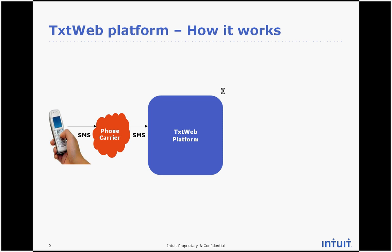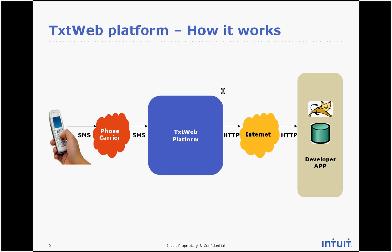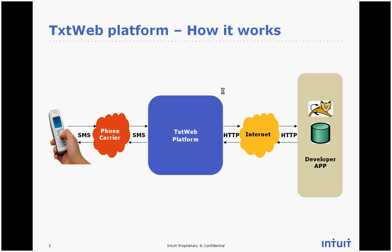When the request reaches the TextWeb platform, it is translated to HTTP and then sent over the internet to a developer application. The developer's application takes the request, does the necessary processing, and sends the reply back to the TextWeb platform, which is then sent via SMS back to the user's handset.